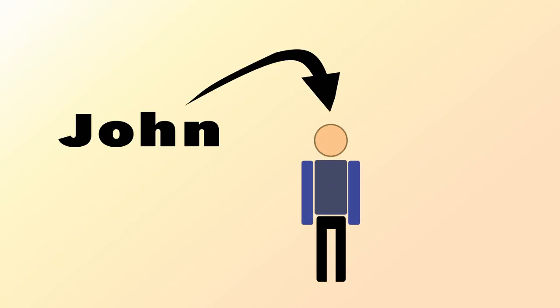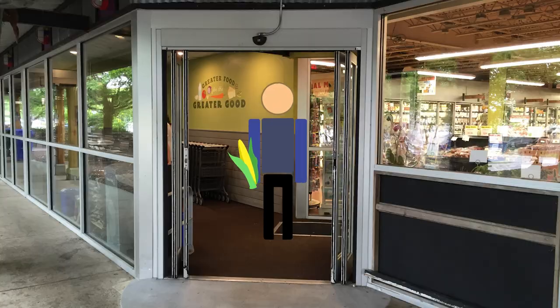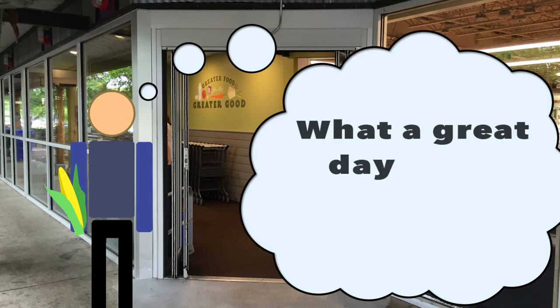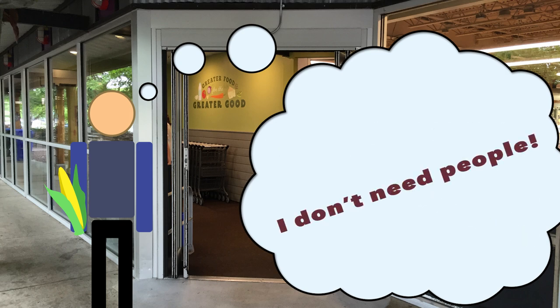This is John. John is currently shopping for corn to eat for dinner. As John leaves the store, he thinks to himself, what a great day to be independent. I'm glad I can provide for myself without having to rely on others.